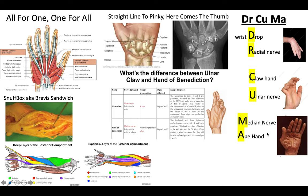I know that claw hand and the hand of benediction — which is significant for median nerve damage — can be confusing at times. So I went ahead and included this chart to explain how you can discern ulnar claw hand from the hand of benediction sign. Whatever your instructor taught you, that's the way I would go, but I understand there's a lot of confusion between the two, so I wanted to include this to help clear it up.